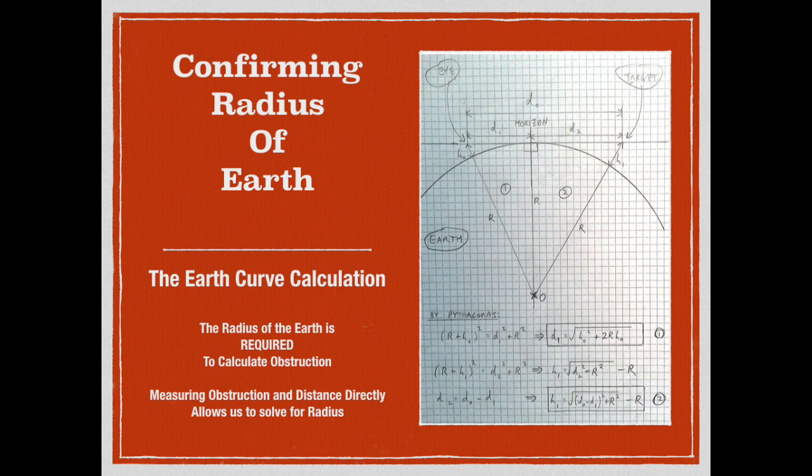Since we don't want to rely on a single method to calculate the radius, here's a second way that we can confirm the radius of the earth. We know that on a sphere we're going to have a drop over the horizon with distance. We can clearly and easily measure that on the surface of the earth. Knowing the distance between the two points and knowing the drop, we can actually calculate the radius of the earth from that.